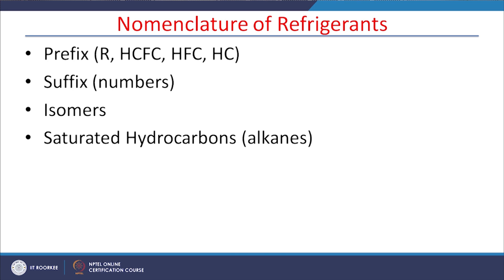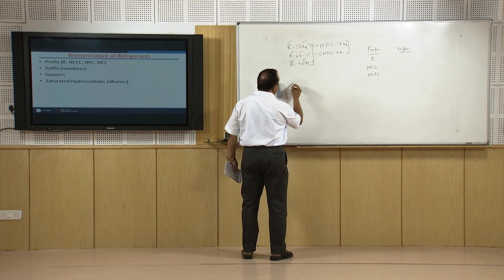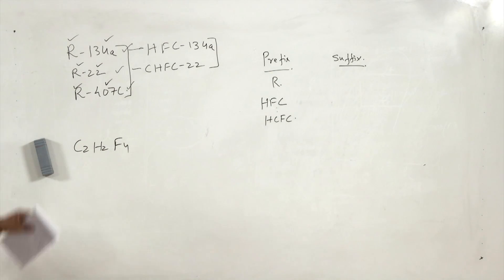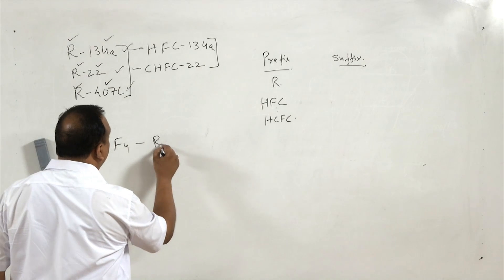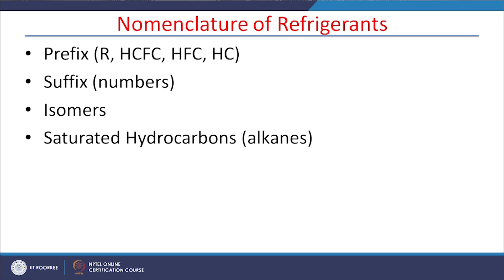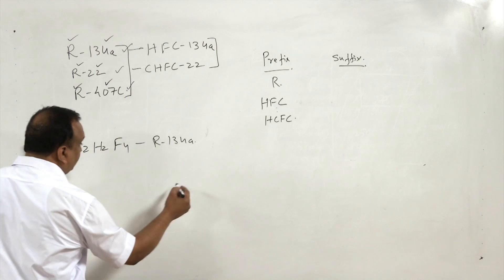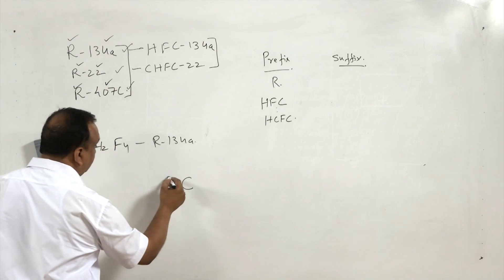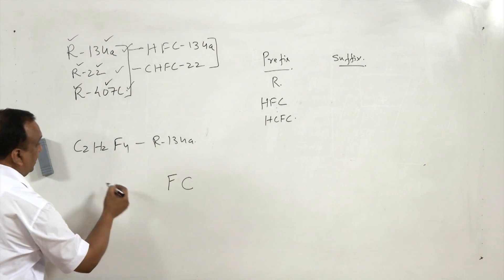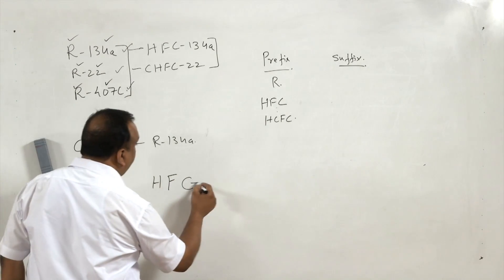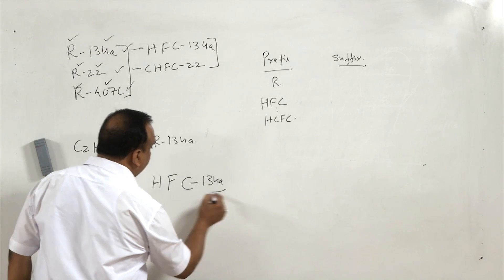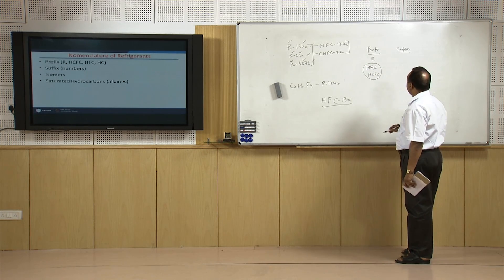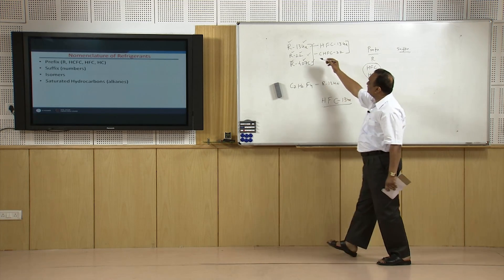Now I will take another example: tetrafluoroethane, C2H2F4. C2H2F4 is R134A. Here in deciding the prefix: it has carbon, it does not have chlorine, it has fluorine and it has hydrogen. So it is HFC134A. This is how the prefix in the nomenclature of a refrigerant is decided. Now let us come to the suffix — these numbers.